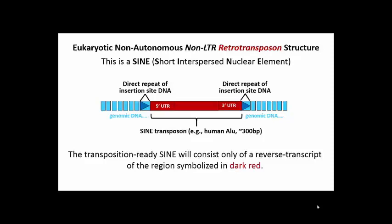Like other transposons, SINEs generate target site direct repeats flanking the inserted element. Like LINEs, they lack LTRs and have instead 5' and 3' UTRs, and can be transcribed. But as non-autonomous elements, SINEs lack the genes for enzymes needed for transposition. In fact, they typically lack any active genes.